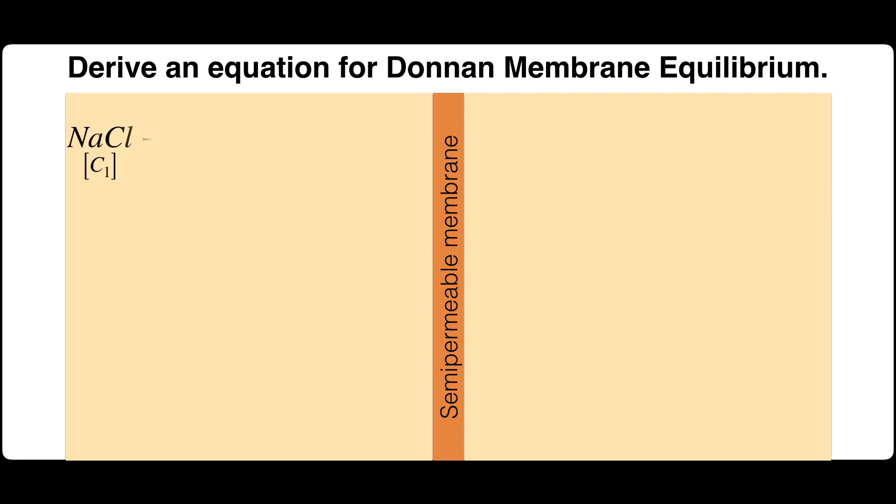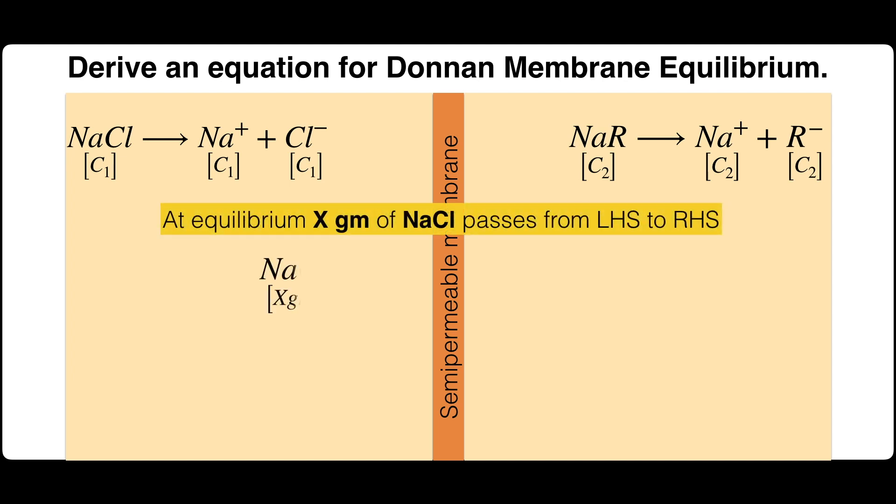Consider a solution of sodium chloride of concentration C1 is separated from a solution of sodium R having concentration C2 by means of a semi-permeable membrane. When the diffusion takes place, X grams of sodium chloride passes from left-hand side to right-hand side.